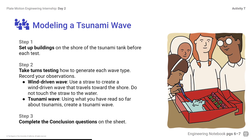Modeling a Tsunami Wave directions: Step 1 - Set up buildings on the shore of the tsunami tank before each test. Step 2 - Take turns testing how to generate each wave type and record your observations. For a wind-driven wave, use a straw to create a wave that travels forward toward the shore — do not touch the straw to the water. For a tsunami wave, using what you have read about tsunamis, create a tsunami wave. Step 3 - Complete the conclusions questions. You can move parts of the model but do not pick it up or take it apart. Be careful not to splash or spill the water.